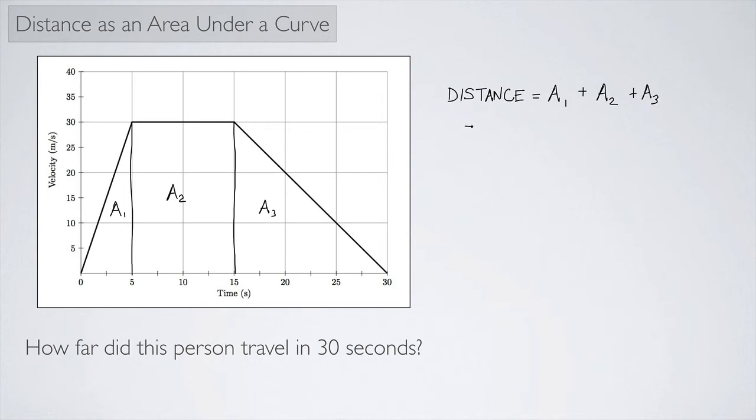Okay, so what's A1? Well, this would be the area of this triangle. The area of a triangle is one half base times height. So it would be one half times the base, the base is five seconds, and the height is 30 meters per second. So I can put that in here and you can see that the units will cancel and I will be left with meters.